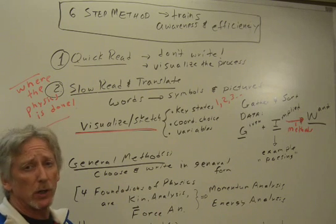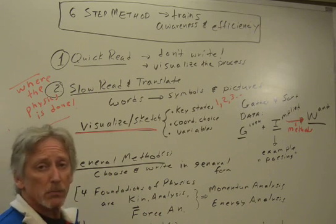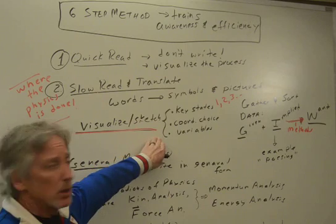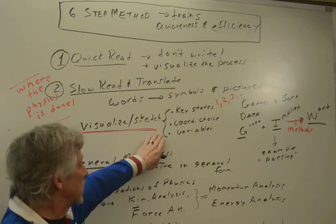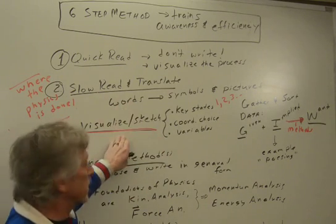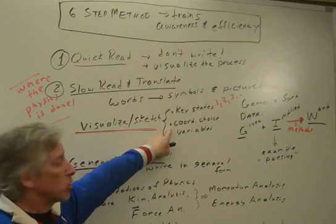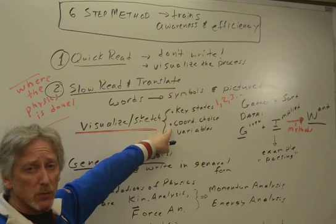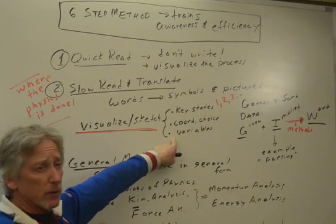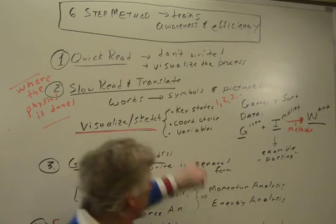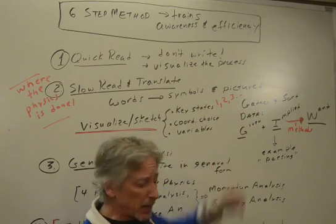Otherwise, again, it's random and seems, frankly, hopeless and becomes hopeless. Many people drop out. You don't need to. You do this diligently, you're going to progress. Visualize and sketch. Show the key states, like a motion diagram. Show which way you choose is positive, what coordinates you're using. Show all the variables on that picture. As you do that, you might want to make a list where you gather and sort the data.